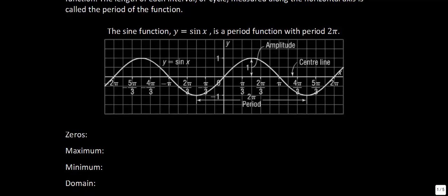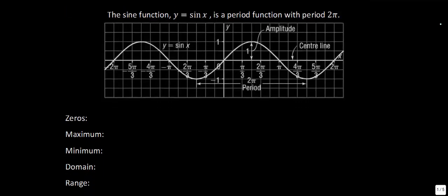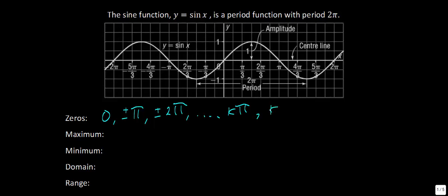We're going to take this sine function and look at some of its characteristics. Starting with the zeros — where does the function cross the x-axis? It crosses at 0, then at π, and correspondingly at −π, so plus or minus π. It also crosses at 2π and −2π, so plus or minus 2π. Continuing, it goes through any multiple of π, written as kπ, where k is a member of the integers.